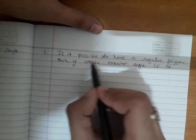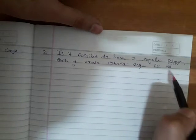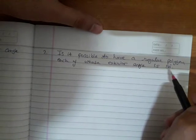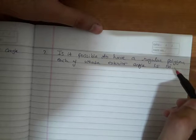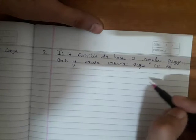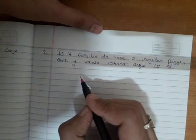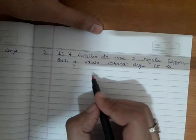To check the possibility of a given exterior angle, we will use the formula for the measurement of each exterior angle. With that formula we will find the number of sides. If the number of sides is a whole number,